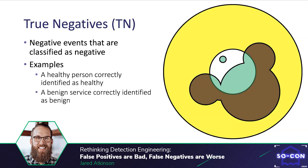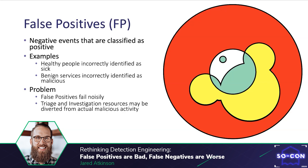A true negative event is defined as negative events that are classified as negative — a healthy person correctly identified as healthy, or a benign service correctly identified as benign. These are events we can happily ignore since we are not alerting on them and they are not malicious by nature. False positives are negative or non-malicious events that are classified as positive or malicious — healthy people incorrectly identified as sick, or benign services incorrectly identified as malicious.